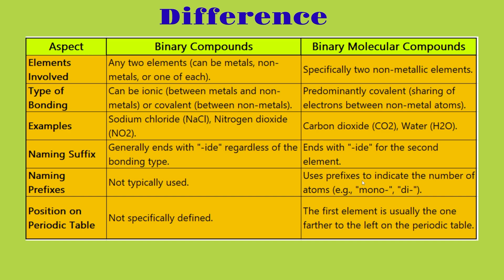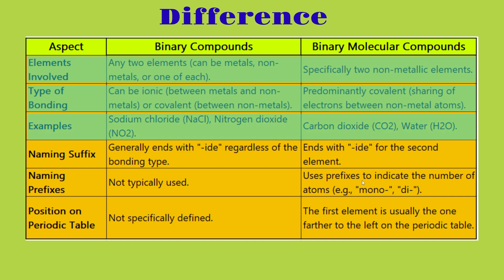For the type of bonding, binary compounds can be ionic — meaning metals and non-metals — or they can be covalent, meaning two non-metals. For binary molecular compounds, it's two non-metals sharing electrons with each other. Examples for binary compounds include sodium chloride and nitrogen dioxide, while binary molecular compounds include carbon dioxide and water. For the naming suffix, binary compounds generally end with '-ide' regardless of bonding type, and binary molecular compounds also end with '-ide' for the second element.